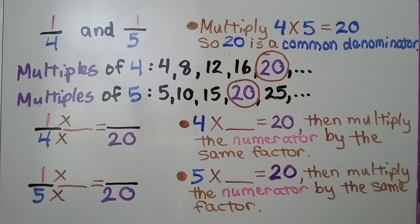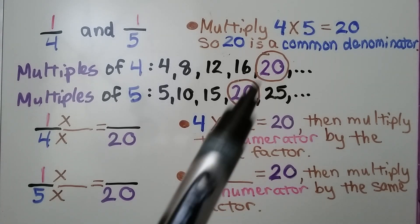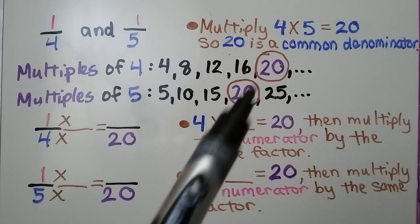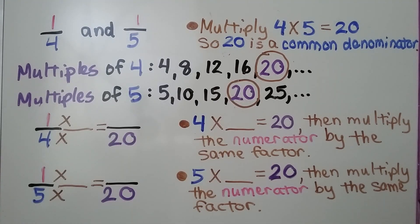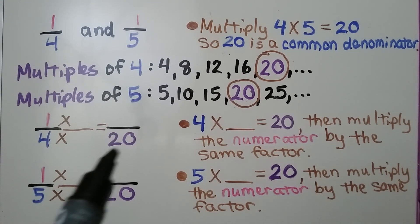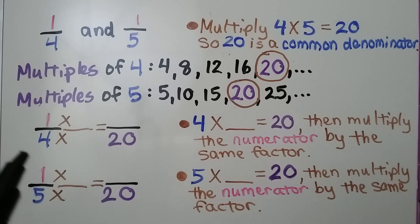We can also list the multiples of 4, then make a list of the multiples of 5, and find a multiple that they have in common. They have 20 in common, so again we see that 20 would be a common denominator.